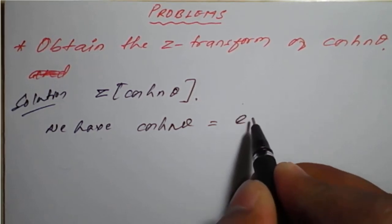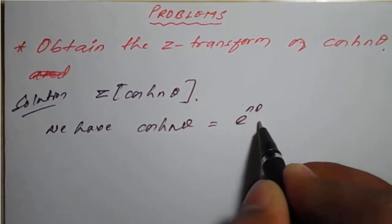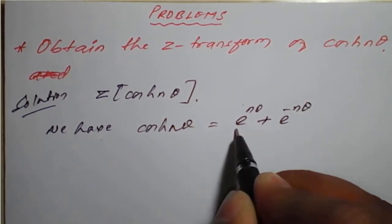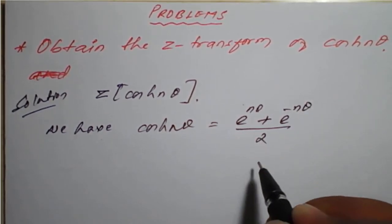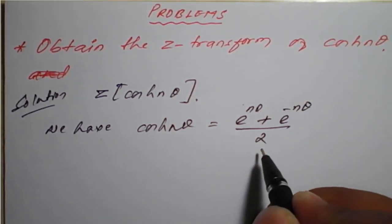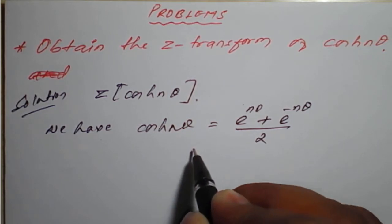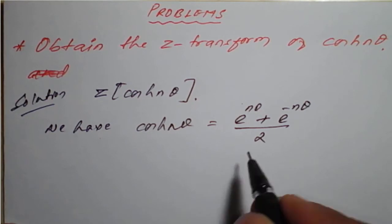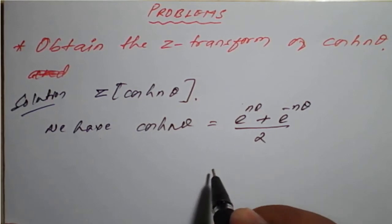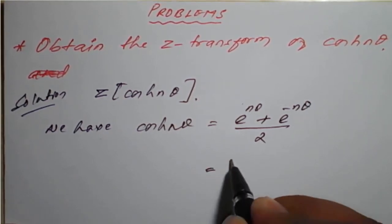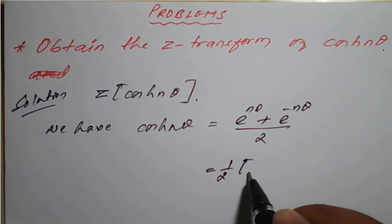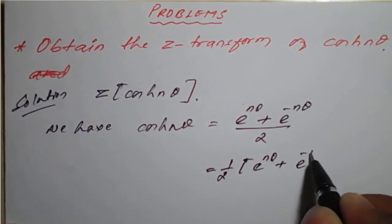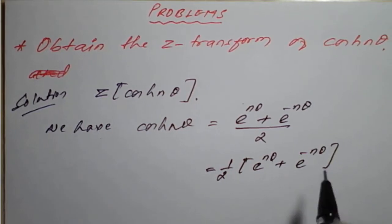First, we find cosh(nθ) according to the exponential formula. It is given by e raised to nθ plus e raised to minus nθ, all divided by 2. This is the formula for cosh(nθ) in exponential form, which is 1/2 times (e^(nθ) + e^(−nθ)).